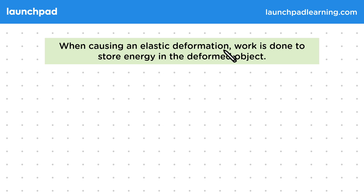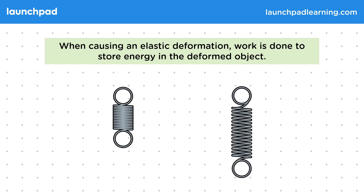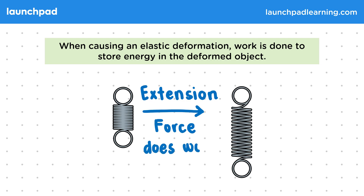When causing an elastic deformation, work is done to store energy in the deformed object. Remember that work is the transfer of energy that occurs when an object is moved a distance by an applied force. Deformations occur when multiple forces are applied to an object, and they include extensions and compressions. Stretching a spring is an example of a deformation where the length changes. The spring is deformed due to the application of two equal and opposite forces, therefore work must be done as the bottom of the spring moves due to the force.